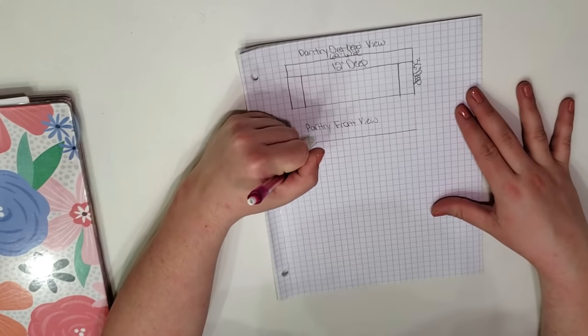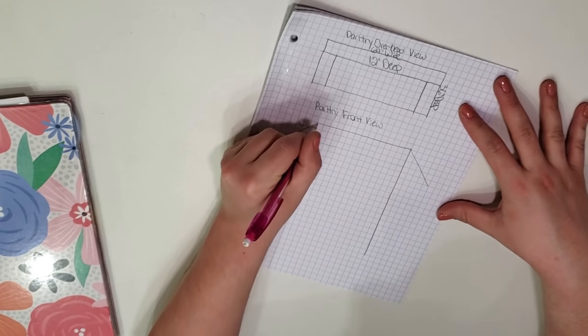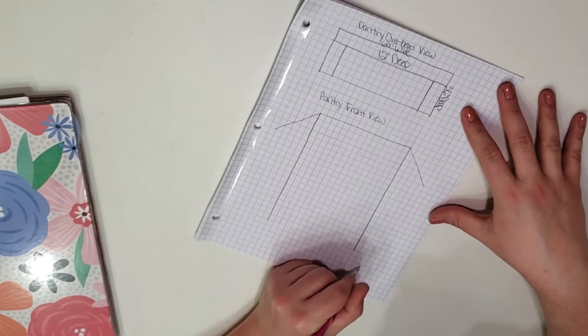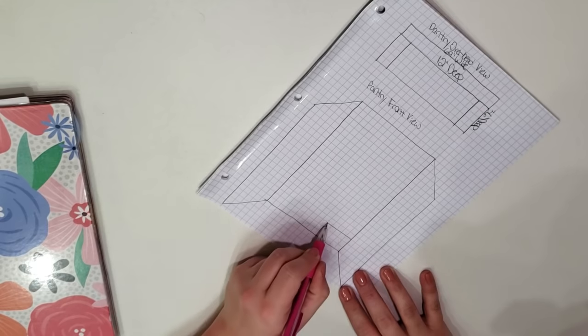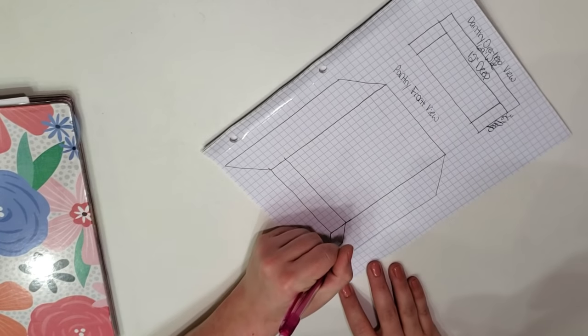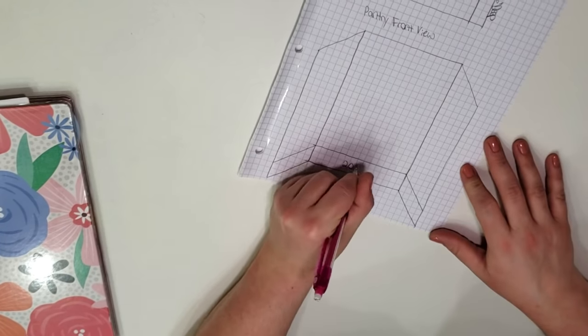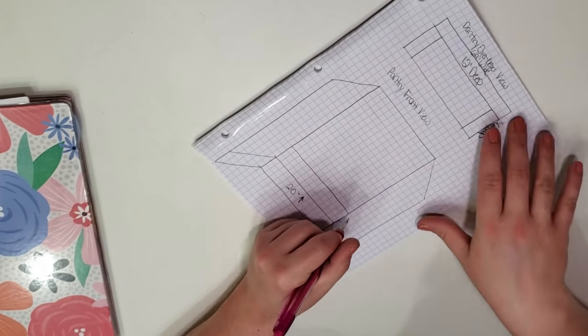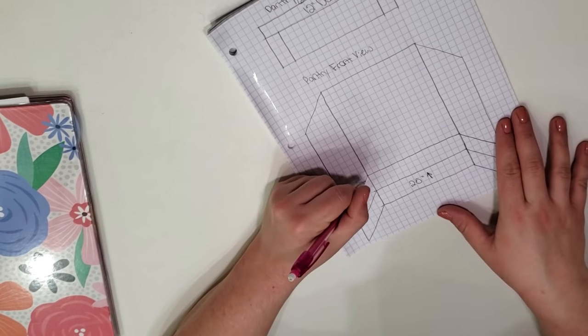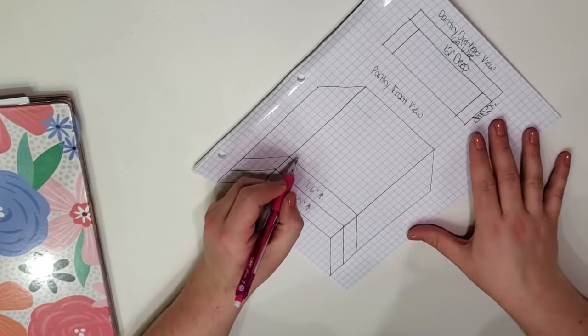Next I drew a front facing view of the pantry and started figuring out how much space I wanted to leave between all of the shelves. I decided to leave 20 inches beneath the bottom shelf to make room for larger bulk items, 16 inches between the bottom and the second to the bottom shelf, and then 12 inches between the top shelves with a total of five shelves altogether.